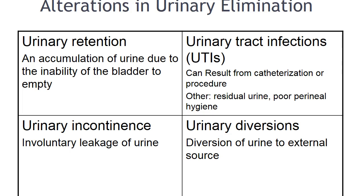Urinary incontinence is involuntary leakage of urine to the point that it is a problem; it can be temporary or permanent, continuous or intermittent. It can affect anyone at any age but is more prevalent in the elderly. Causes can include problems with movement, removing clothing, mental capacity, and incapacity. Continued episodes can cause skin breakdown, especially in the immobile patient. Some clients may have a urinary stoma to divert the flow of urine from the kidneys to an external source, which can be necessary because of trauma, cancer, radiation, fistula, or chronic cystitis.